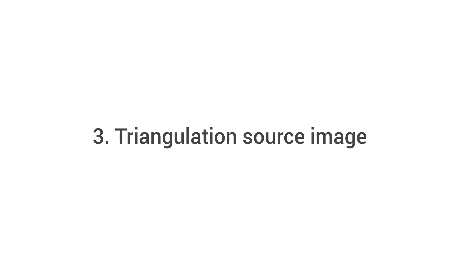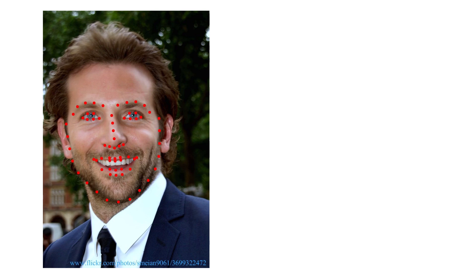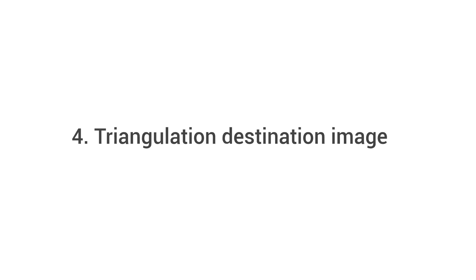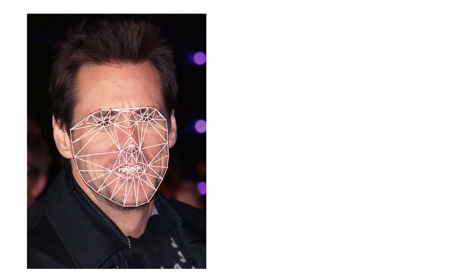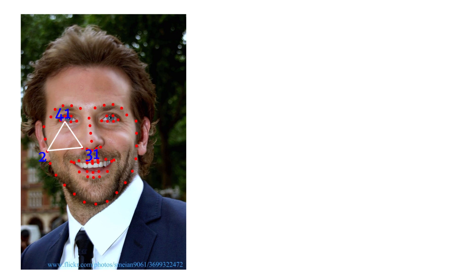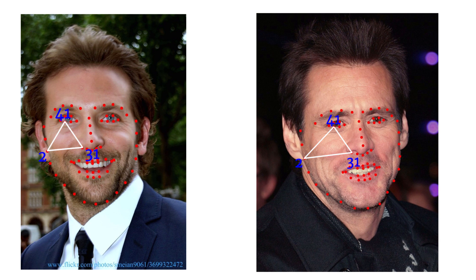Third, triangulation of the source image. Starting from the landmark points, we divide the face into triangles using the Delaunay triangulation. Fourth, the triangulation of the destination image. We need to do the triangulation using the same pattern as the first image. We take the indexes of each triangle of the source image and using those indexes we reconstruct each triangle in the second image, obtaining the same triangulation for both source and destination images.